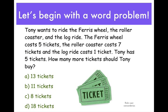Let's begin with a word problem. Tony wants to ride the Ferris wheel, the roller coaster, and the log ride. The Ferris wheel costs 5 tickets, the roller coaster costs 7 tickets, and the log ride costs 1 ticket. Tony has 5 tickets, but how many more tickets should Tony buy? Our answer choices are A: 13 tickets, B: 11 tickets, C: 8 tickets, or D: 18 tickets.